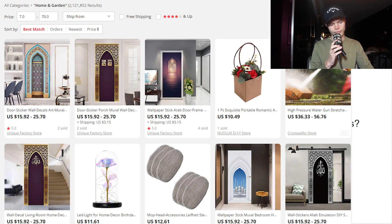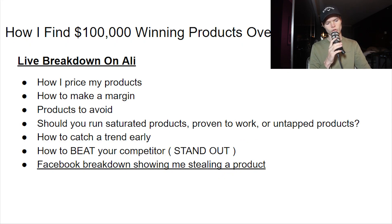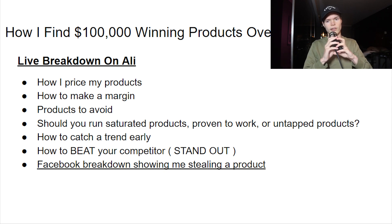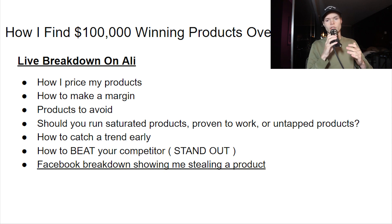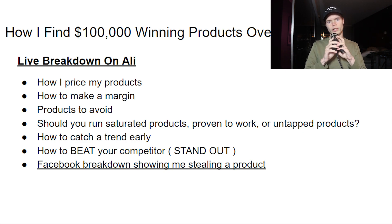What I usually do is go into the Best Match section, sort the price by $7 to $70, and scroll down to find a product. For pricing: some products aren't even worth doubling — like a $2 sealer on AliExpress that doesn't have any value. But some products you can 5x or 10x. Usually you'd buy for $20 and sell for $49, or $25 becomes $49, $7 sells for $29–$32, $10 sells for $35. Always look at your competitors' pricing too.